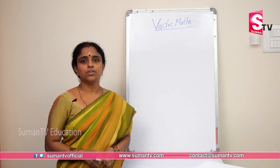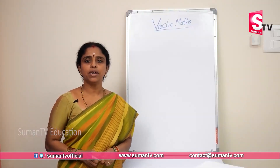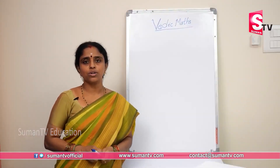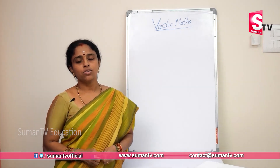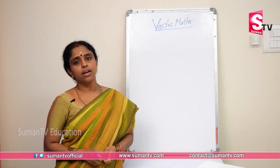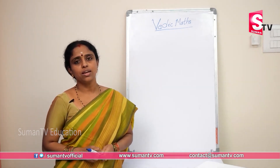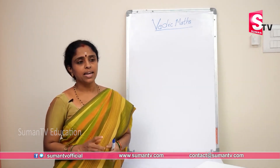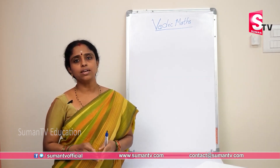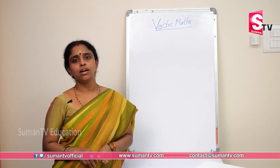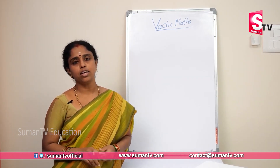Vedic Math is a good example of fast calculation. We will make a multiplication using the Vedic Math method. The 1 to 10 tables are easy to use, and 11 to 99 is also easy to use with this method.